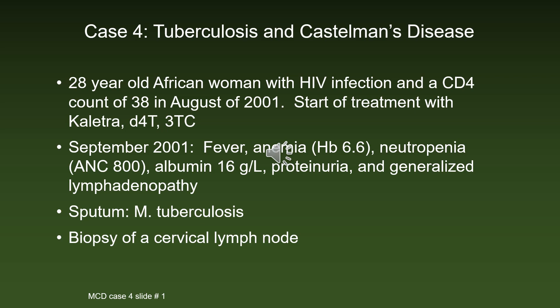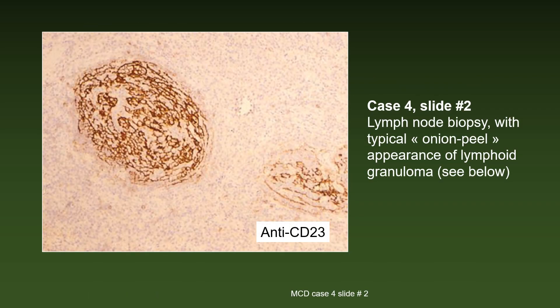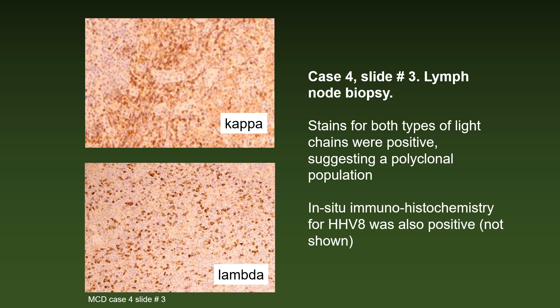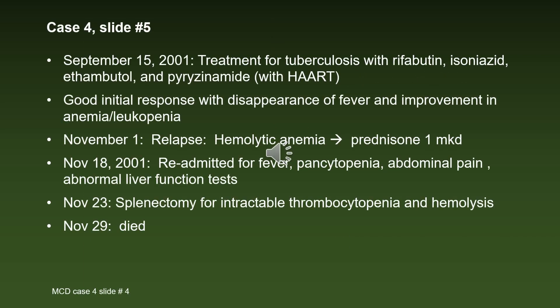A cervical lymph node was biopsied and, to our surprise, it did not show tuberculosis granulomas, but rather the typical onion peel appearance of Castleman's disease. Stains for both types of light chains were positive, suggesting a polyclonal population, typical of CD, and in situ immunohistochemistry for HHV-8 was also positive. On September 15th of 2001, treatment for tuberculosis with rifabutin, isoniazid, ethambutol, and pyrazinamide with HAART was started.